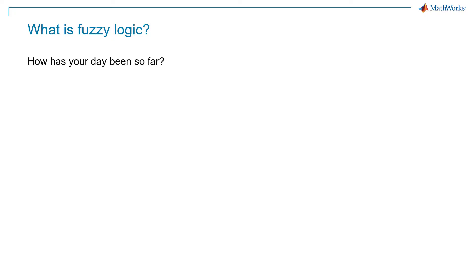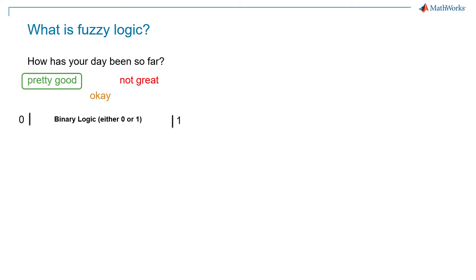Let's consider this exercise. If I were to ask you how your day has been so far, some of you might say your day has been pretty good, some might say not great, and some might say it's just been okay. So what is pretty good to you might not be the same as when I say pretty good or when somebody else says pretty good — the definition can vary from person to person. Unlike binary logic where there is just one truth, just true or false or zero or one, fuzzy logic is a degree of truth and contains a range of values between zero and one. That is fuzziness and that is vagueness.